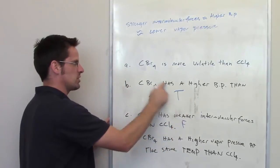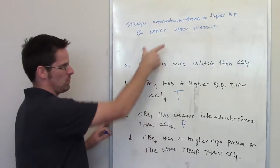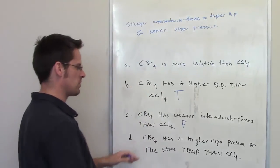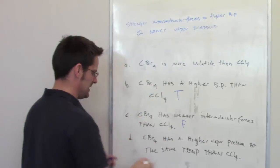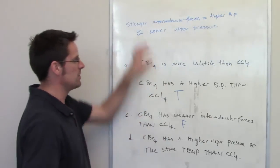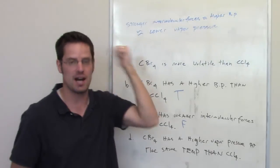So that should answer statement A for you, based on what I put up here. Carbon tetrabromide down here has a higher vapor pressure. This should also answer statement D for you down here, based on the interrelationship that I've got up top.